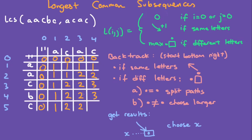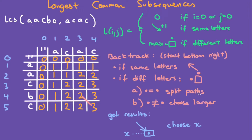Now we're going to backtrack, starting at the bottom right. If they're the same letters, move diagonally — C and C are the same, so move diagonally. Now we're at B and A — they're different letters. We look at the top and the left. These two numbers are the same, so we split the path, meaning you now have two paths: the up path and the left path.